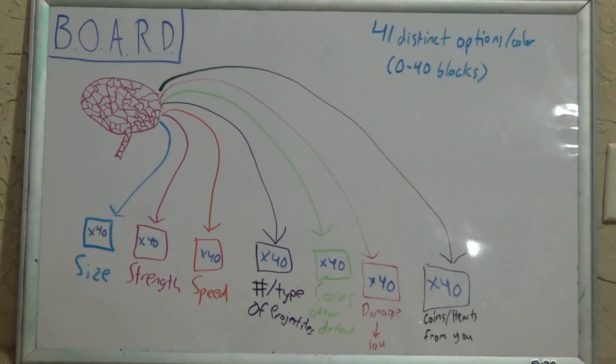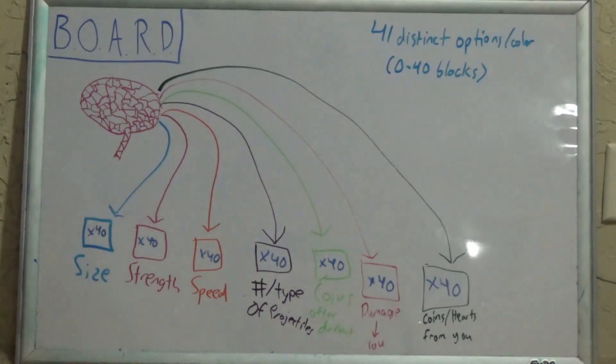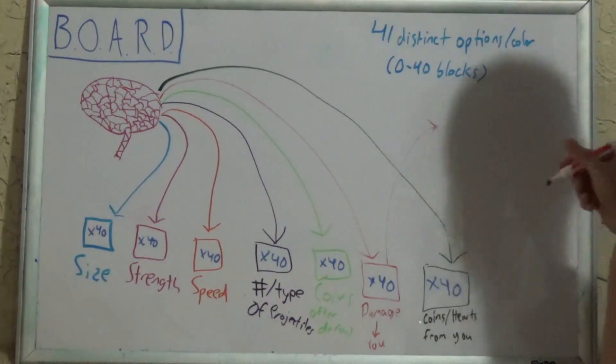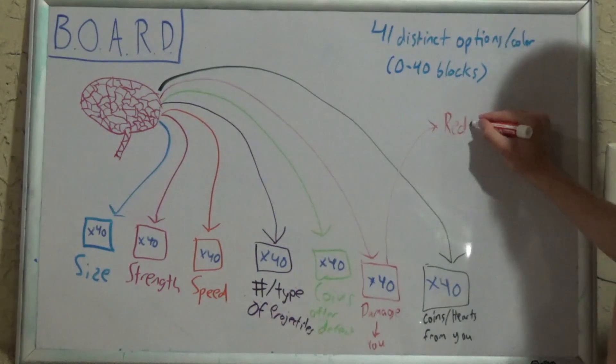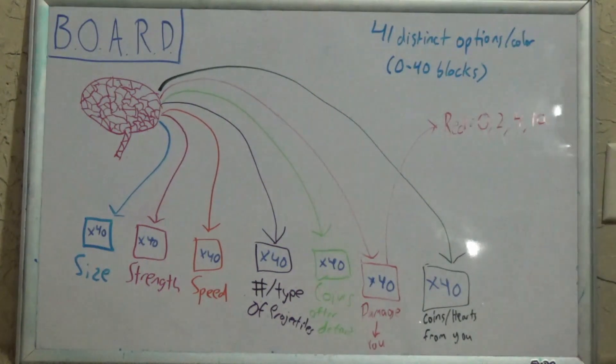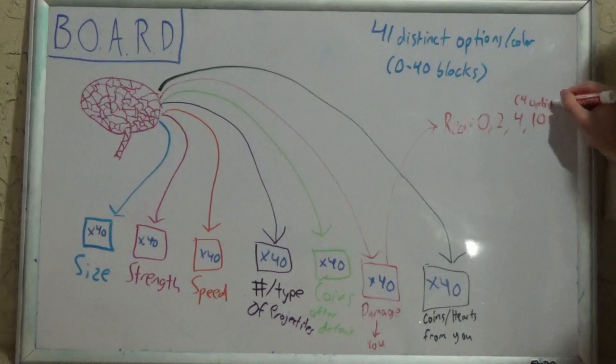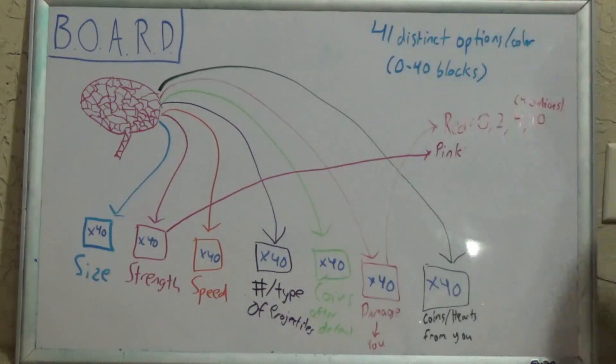However, there are two exceptions. Red and pink blocks. With red, the amount of damage given only changes when there are 0, 2, 4, or 10 red blocks. I know these should be ranges like 0 to 1, 2 to 3, 4 to 9, etc., but you get the point. Pink has 11 different options, 0 to 20 blocks, evens only.